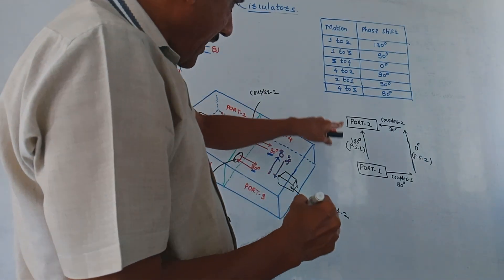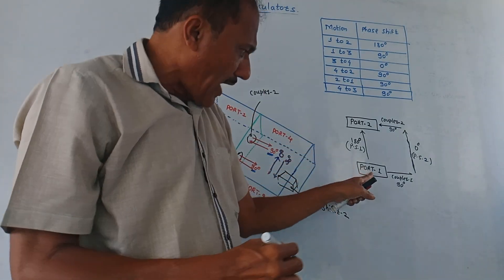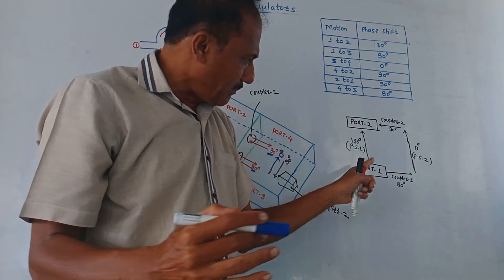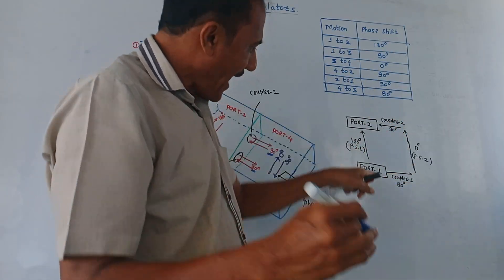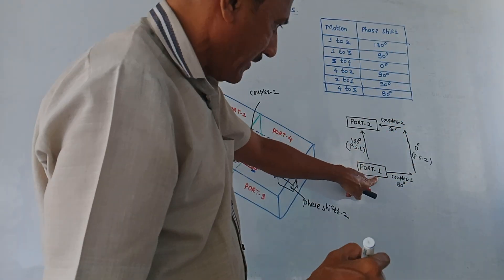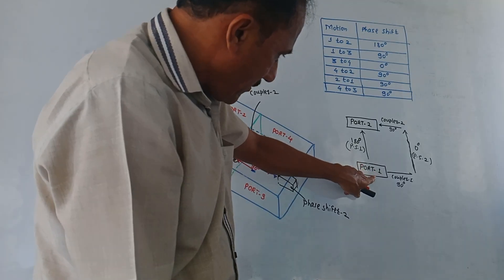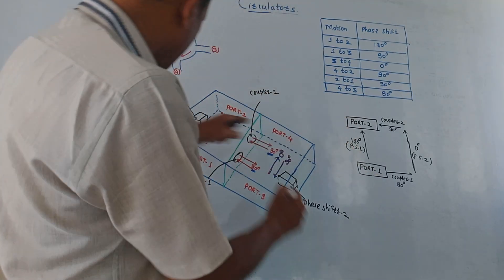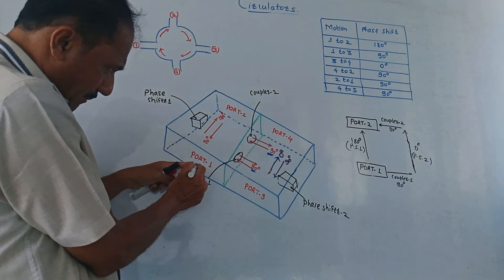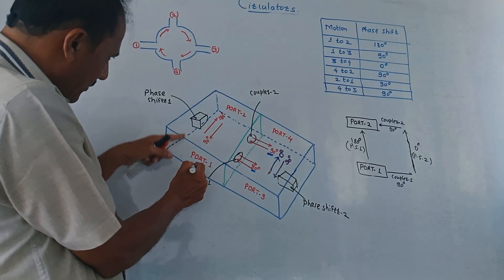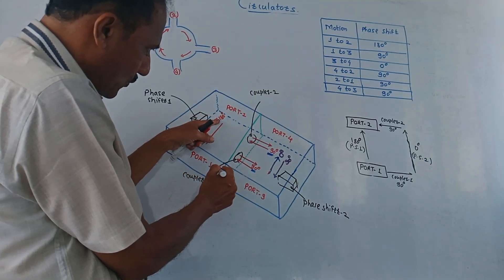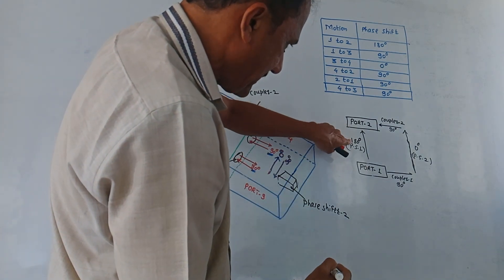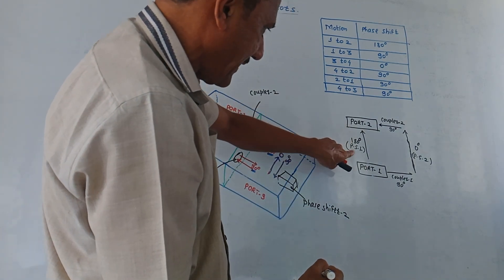If we apply a wave at port 1, when the wave passes through phase shifter 1 and reaches port 2, there is a phase shift of 180 degrees.